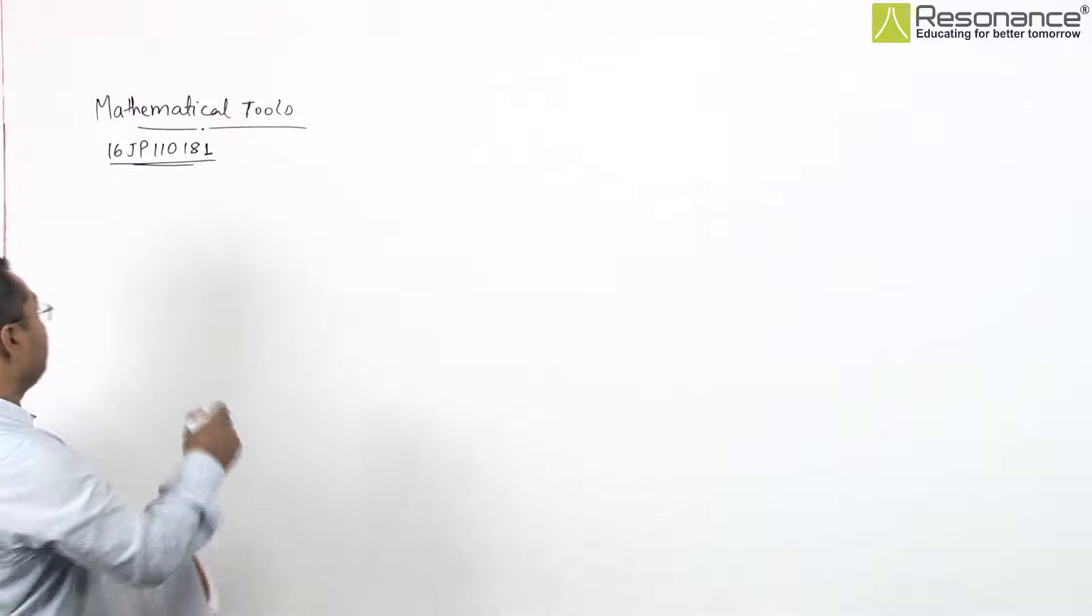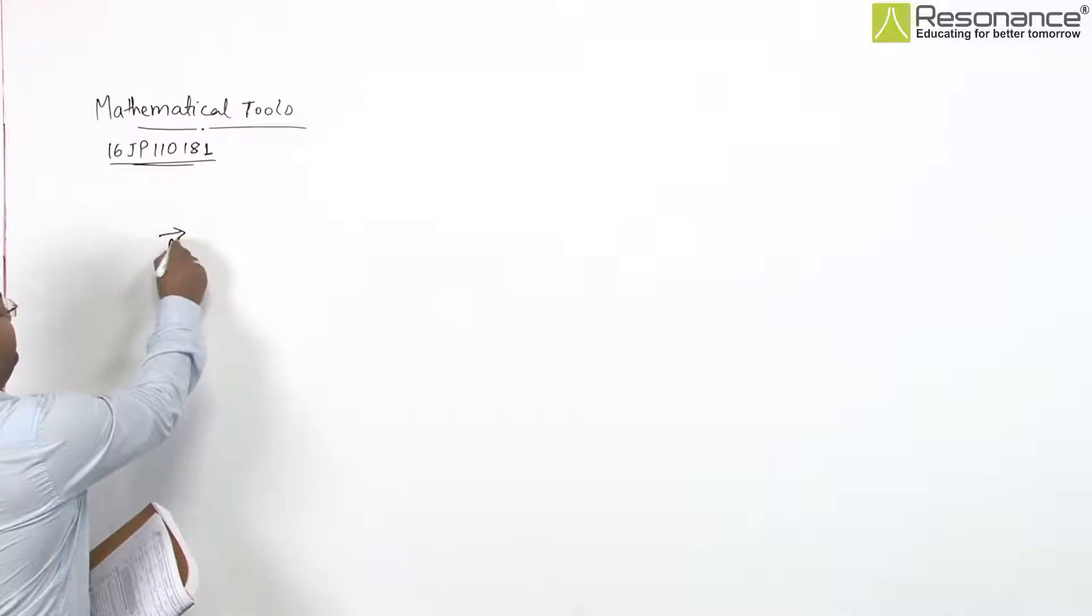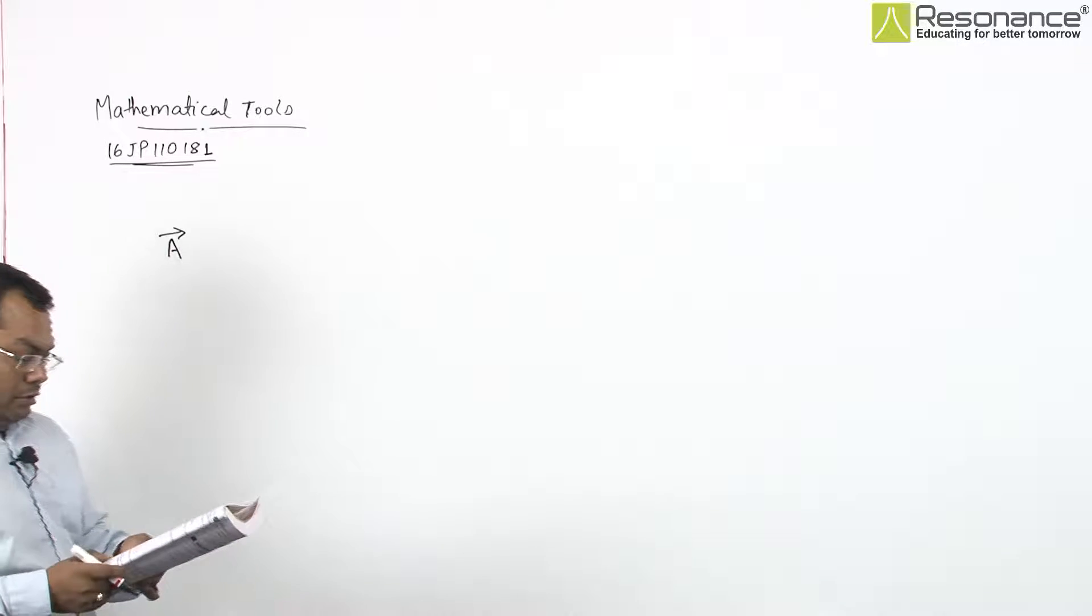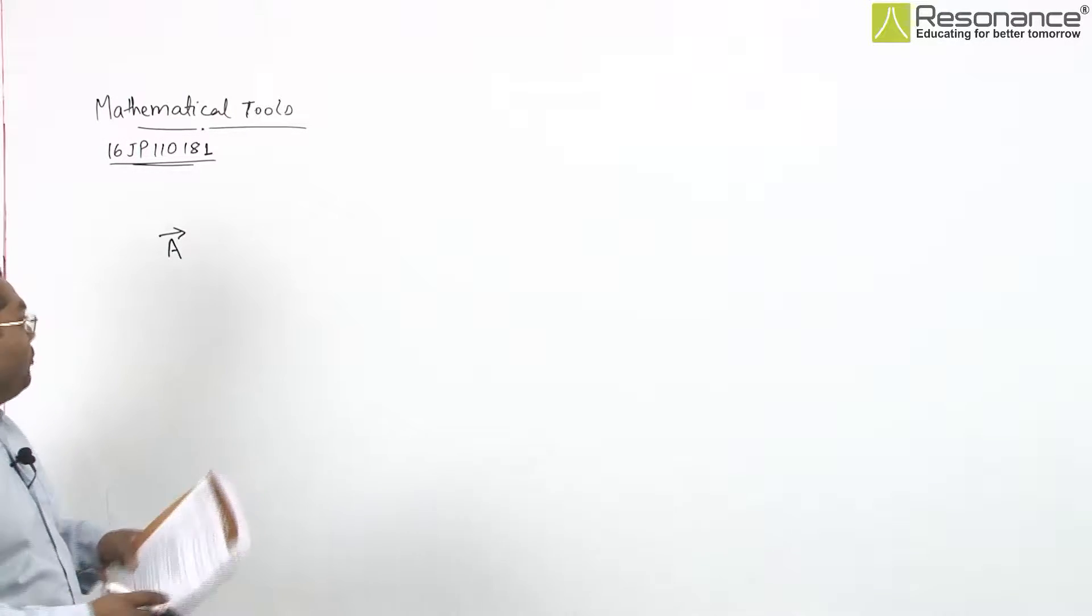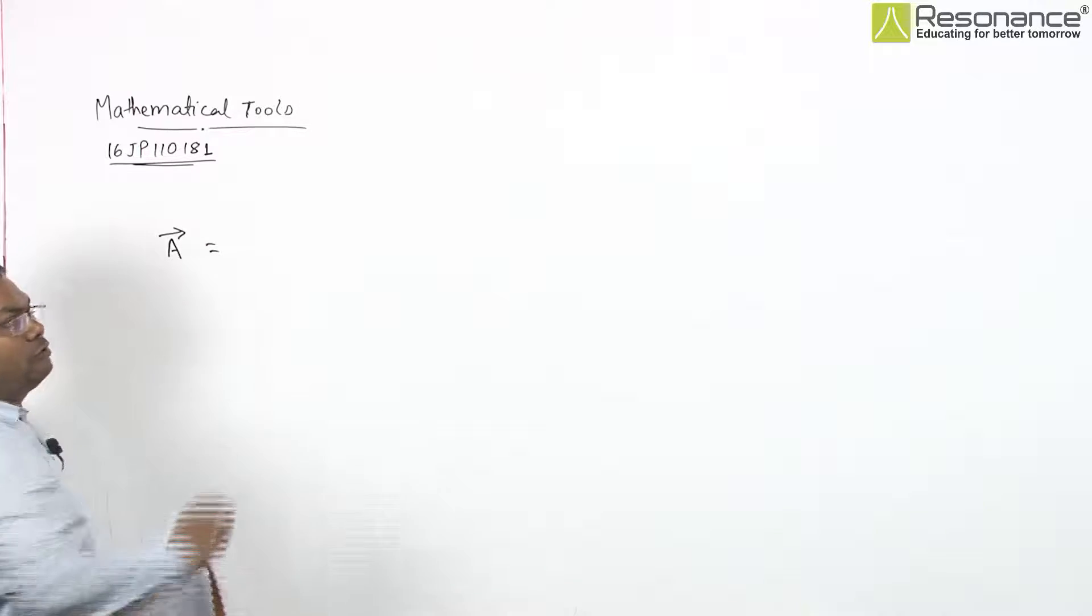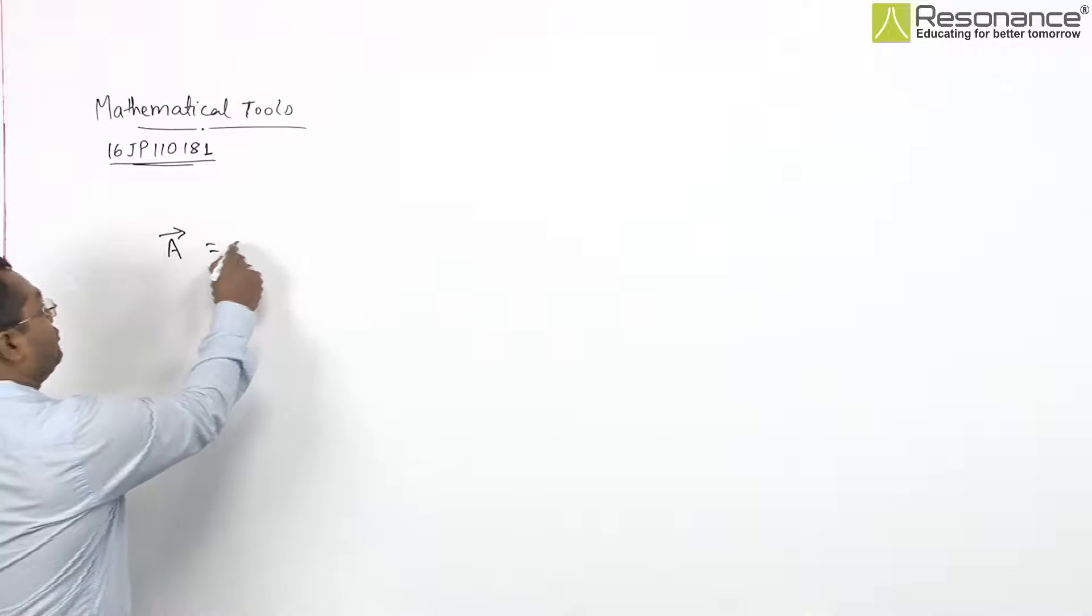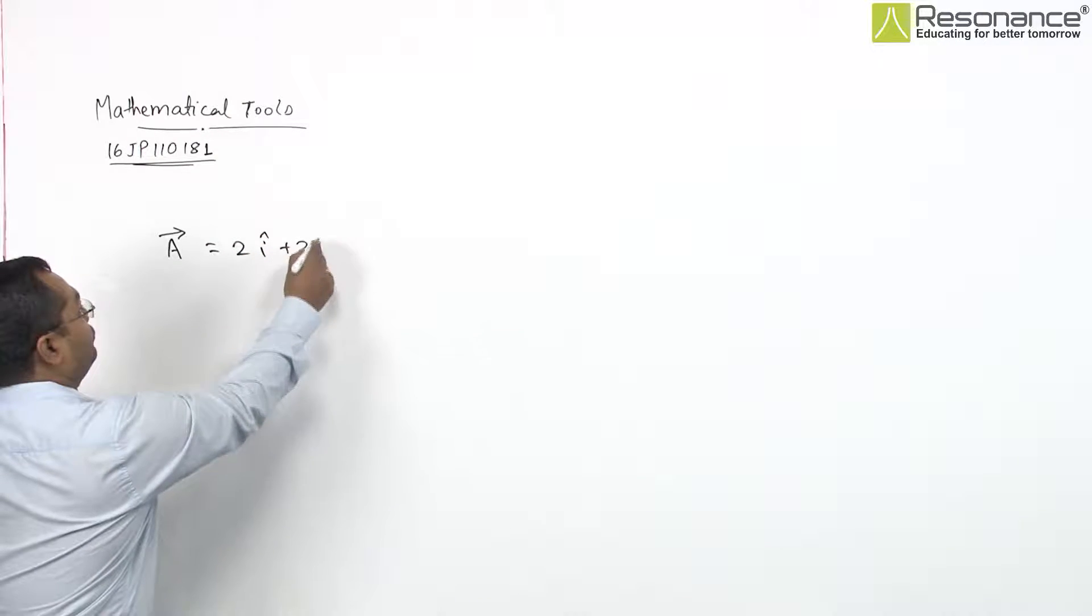In the given question, we have two vectors. Let us suppose vector A, whose rectangular components are 2 comma 2. So A will be 2 i cap plus 2 j cap.